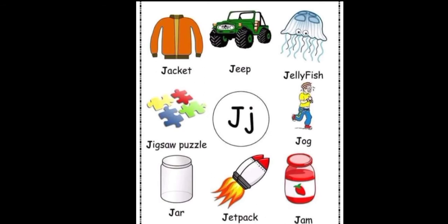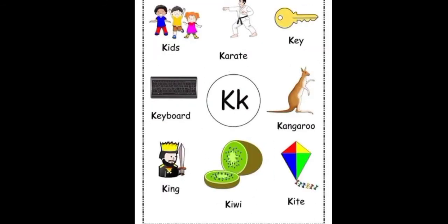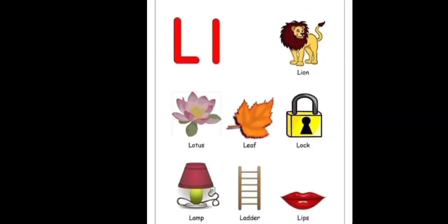J: jog, jaw, jet pack, jam. K: kids, karate, key, keyboard, kangaroo, king, kiwi, kite. L: lion, lotus.